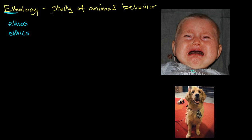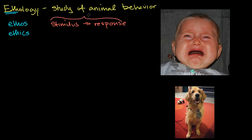Let's first think of a framework, and then we're going to try to apply it to different types of animal behaviors that we see. So first, what is behavior? Well, you have some type of environmental stimulus, and it evokes some type of a response in the animal. That is a pretty good definition of what behavior actually is — it's some type of response to a stimulus in an environment.